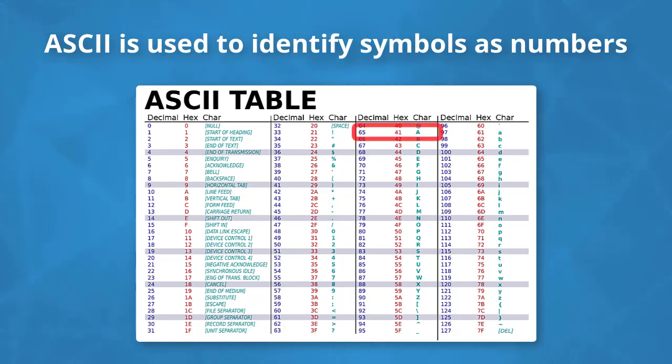For example, as you can see here, the number 65 represents the letter A, whereas the letter B is represented by the number 66, etc.